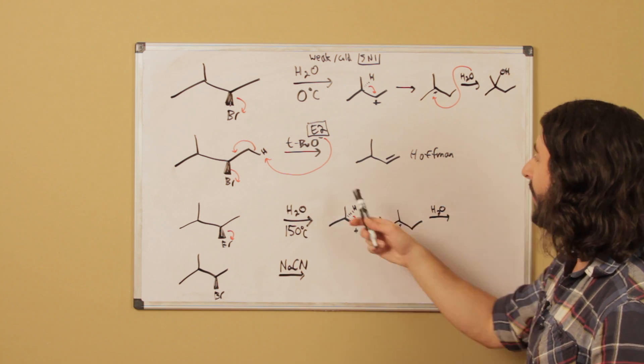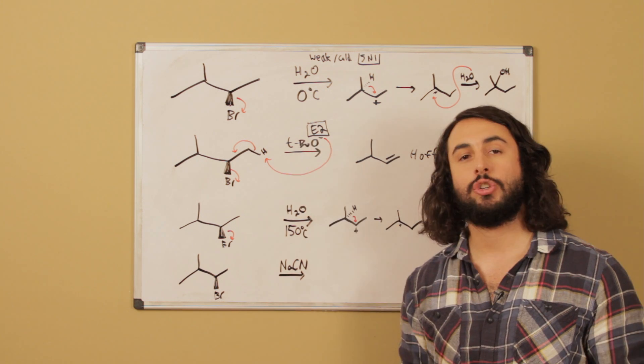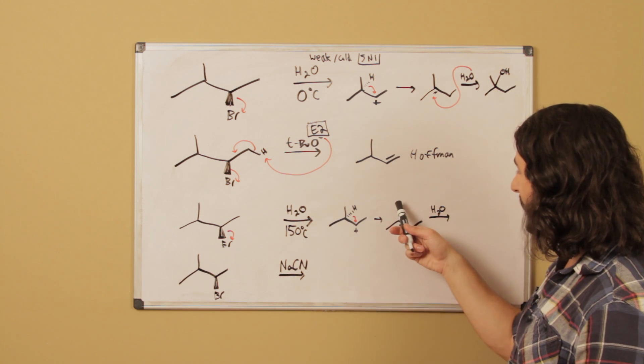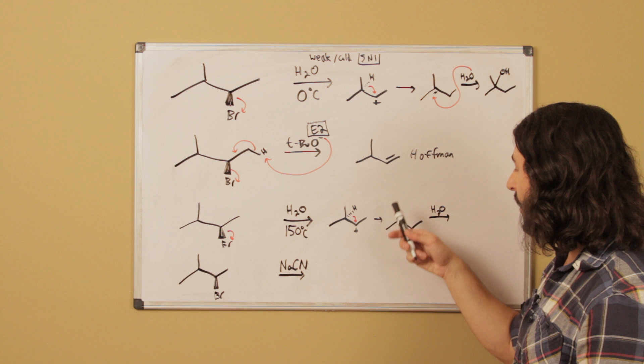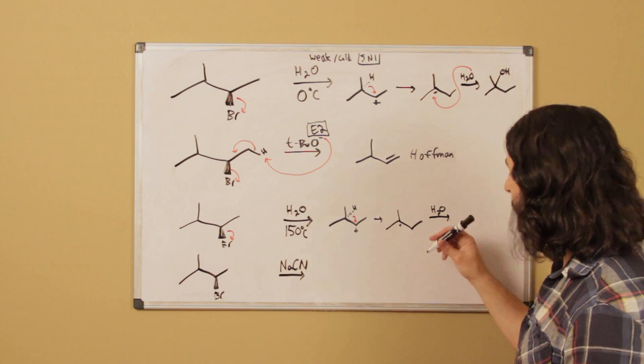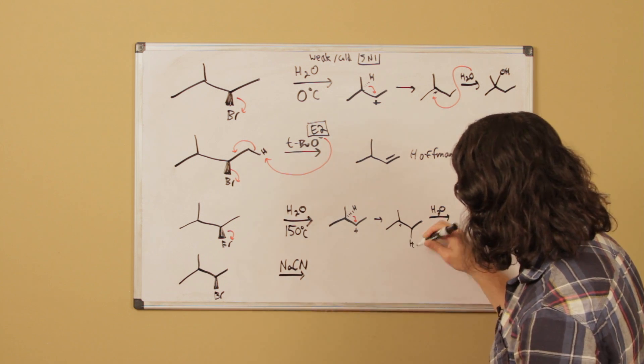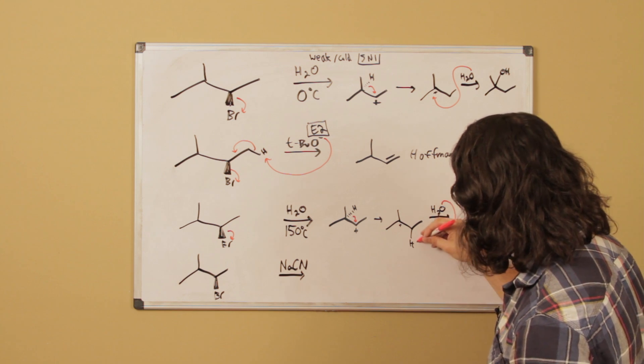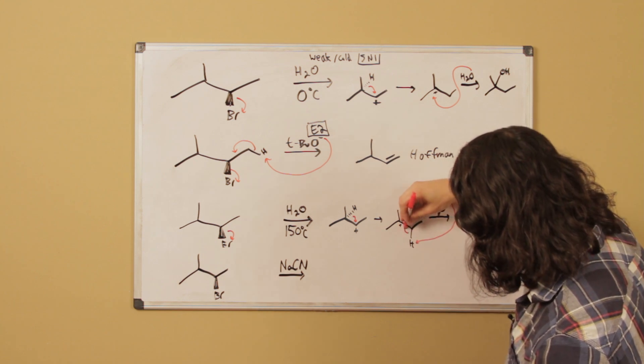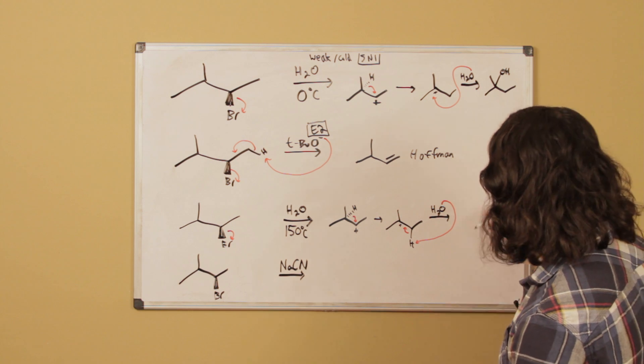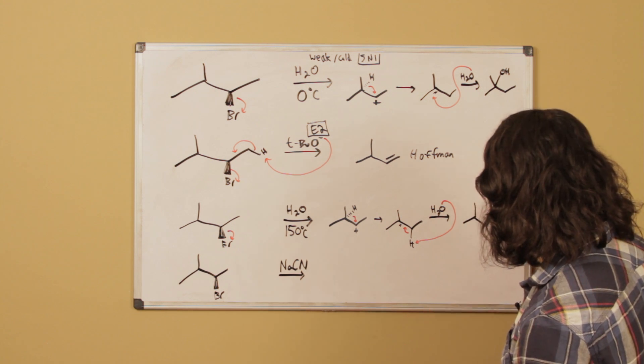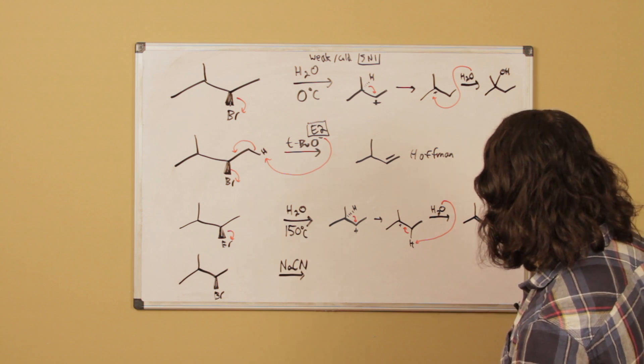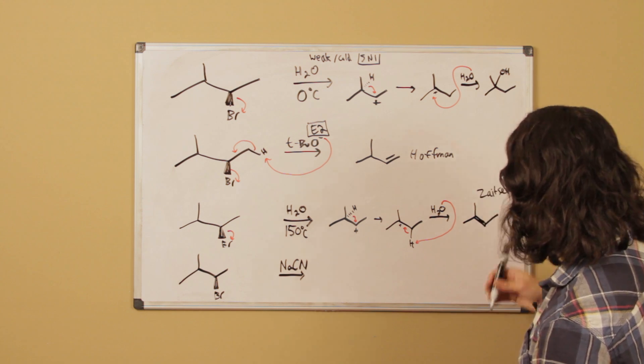Now in this case instead of Hoffman, because of how sterically hindered tert-butoxide is, water is a small molecule. So it has access to these protons on these methyls or it has access to a proton over here. And because thermodynamics favors a more substituted alkene, we are in this case going to probably predominantly get the Zaitsev elimination product.